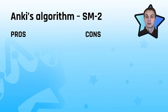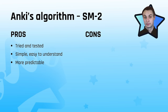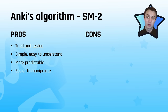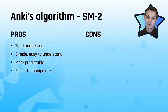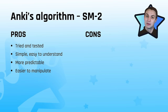Now for the pros and cons of the SuperMemo 2 algorithm. The pros: it's tried and tested, used all over the place, and very simple — easy to understand, which makes it more predictable and easier to manipulate. For example, as a medical student with busy Wednesdays, I wanted to do reviews on Thursday and Friday — it was more predictable. I knew I'd study cards again the next day and then three days after that. The SuperMemo 2 algorithm's simplicity is a genuine pro.